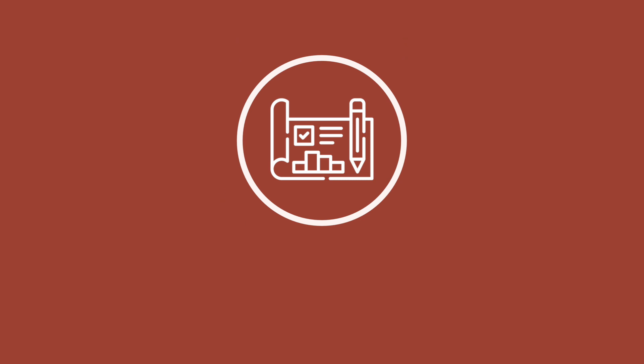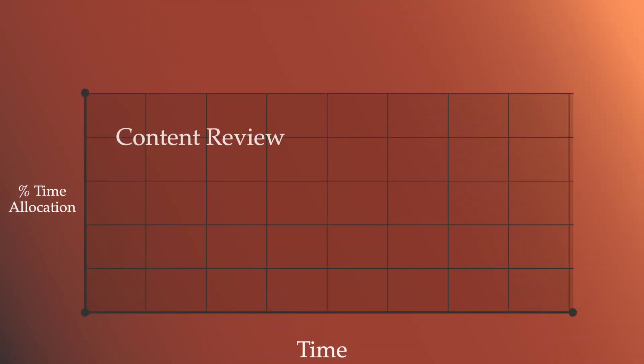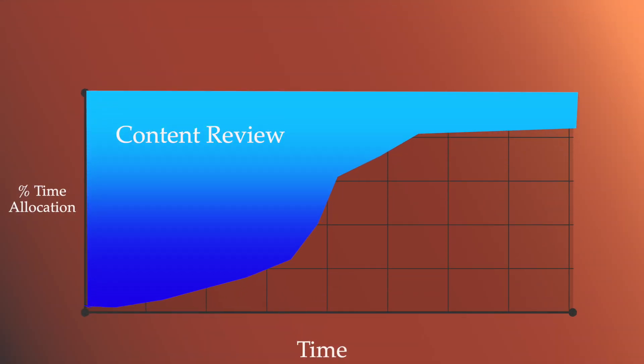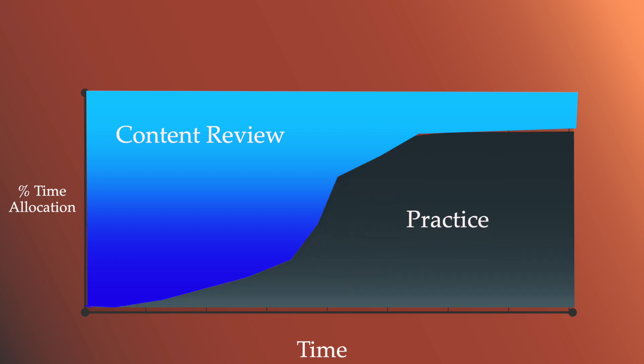Let's start off with how you should distribute content review and practice throughout your studying. You might decide to separate your study plan into two distinct phases — content review and practice. Instead, I recommend you try out what I call the S-curve approach, which involves primarily content review at the beginning of your studying, then gradually increasing the time spent on practice while reducing content review. In your practice, you'll specifically want to touch on topics that you've already covered.